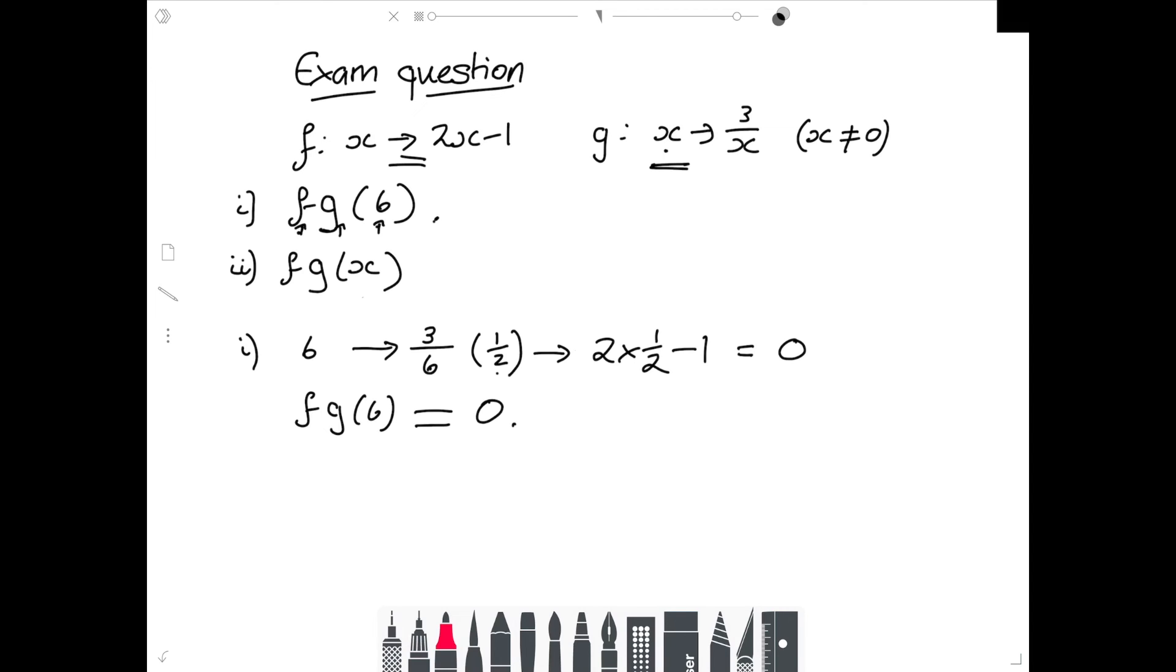Now I'm going to do the same thing again. But instead of using the number 6, in order to do part 2, I'm going to use the letter x. So I'm going to put in x, I'm going to do the function g first. And the function g tells me to divide into 3. Then I'm going to do the function f, which tells me to multiply by 2, and then take away 1. So out the other end, I'm going to start with x, I'm going to divide it into 3, I'm going to multiply all of that by 2, and then I'm going to take away 1.